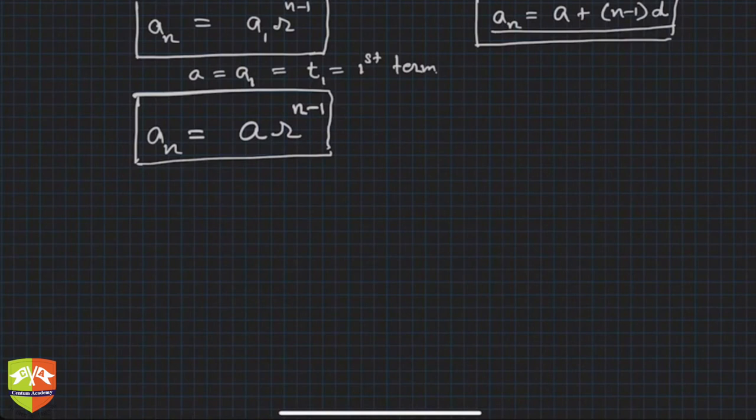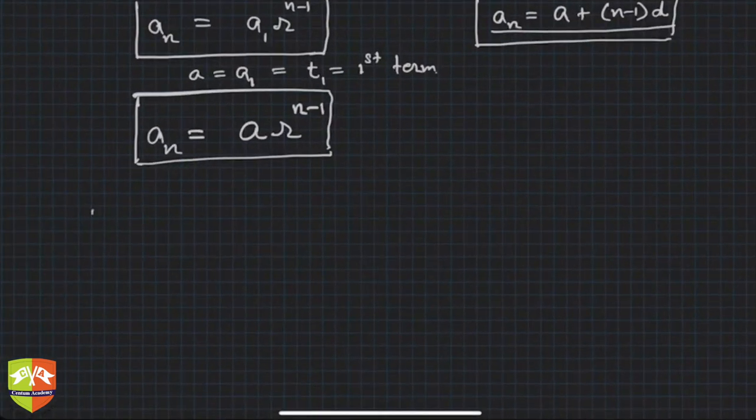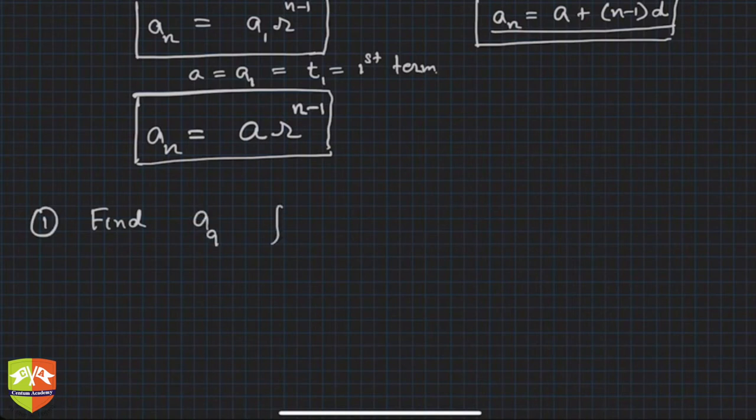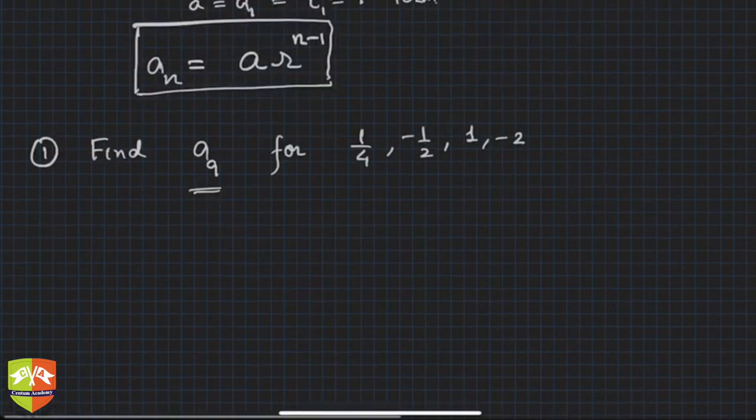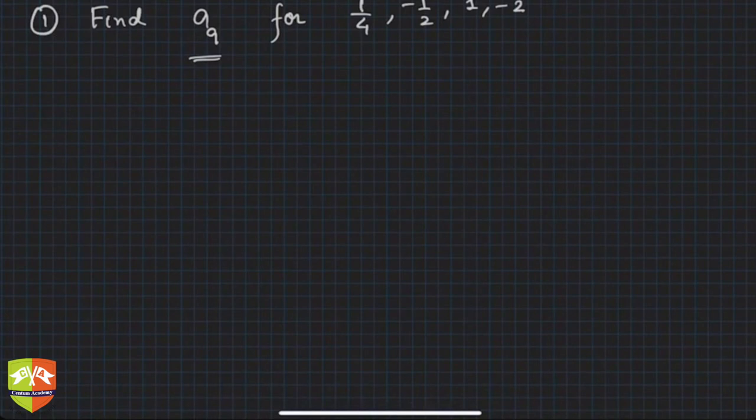Question number 1: find a9 for the GP 1/4, -1/2, 1, -2. Not necessarily natural numbers, we are mostly dealing with rational numbers. This is a GP. First of all, tell me the common ratio and find the 9th term.